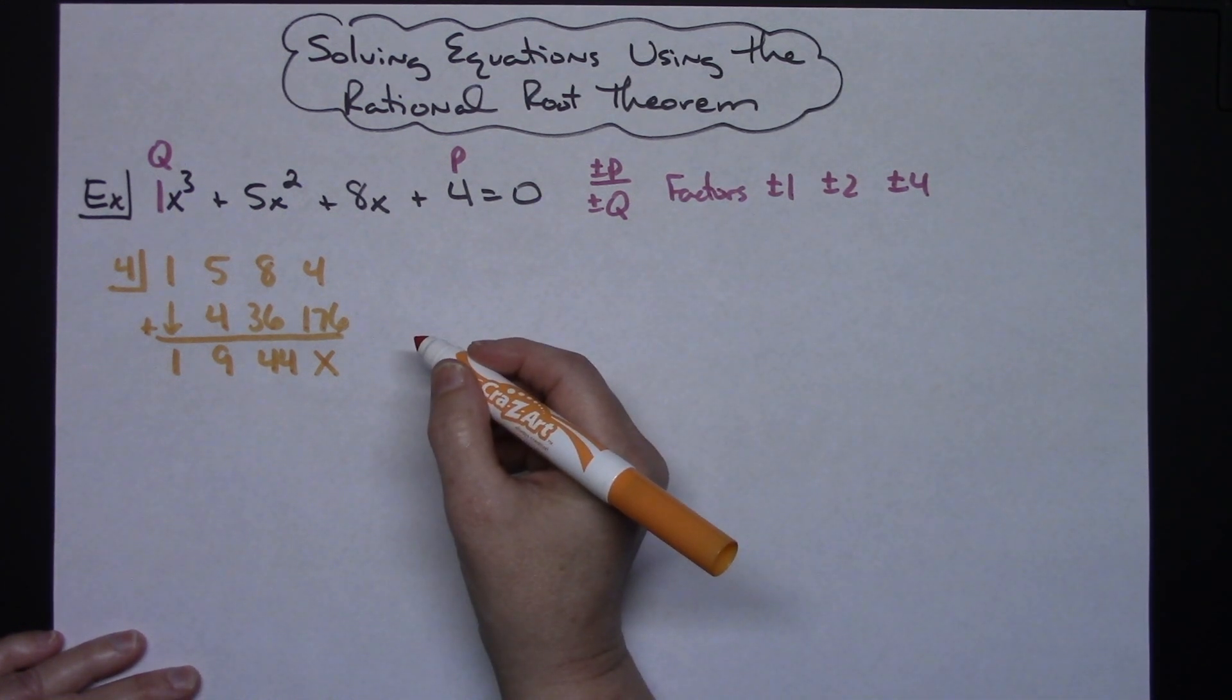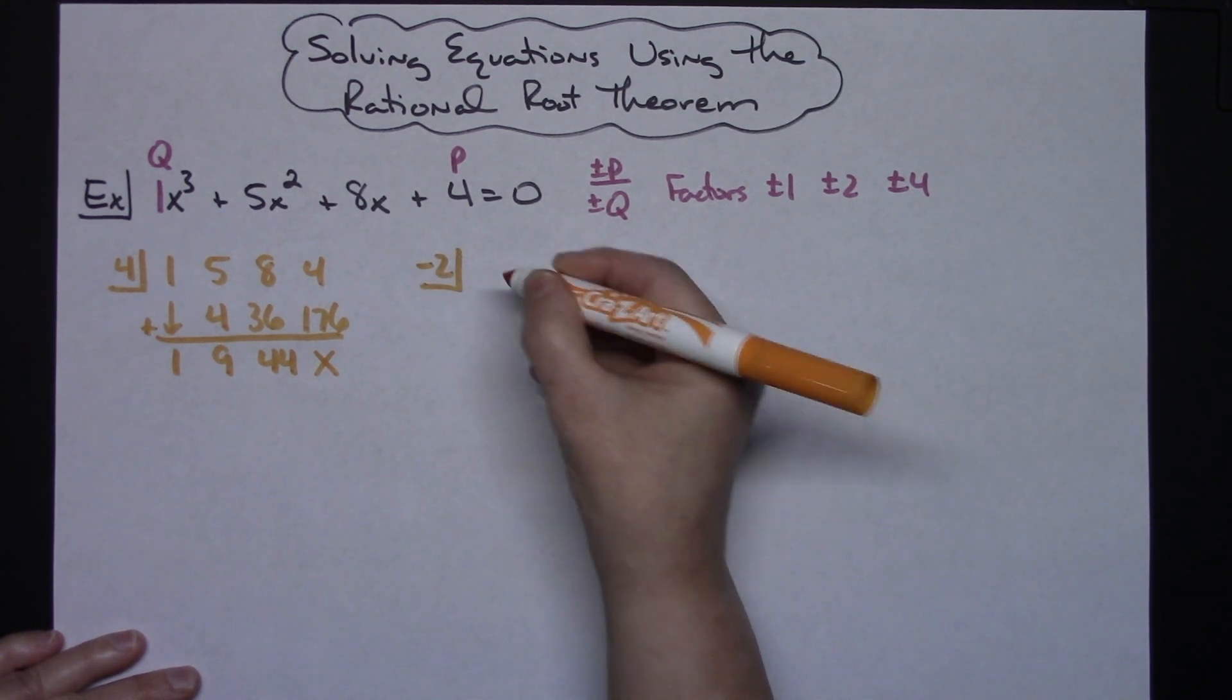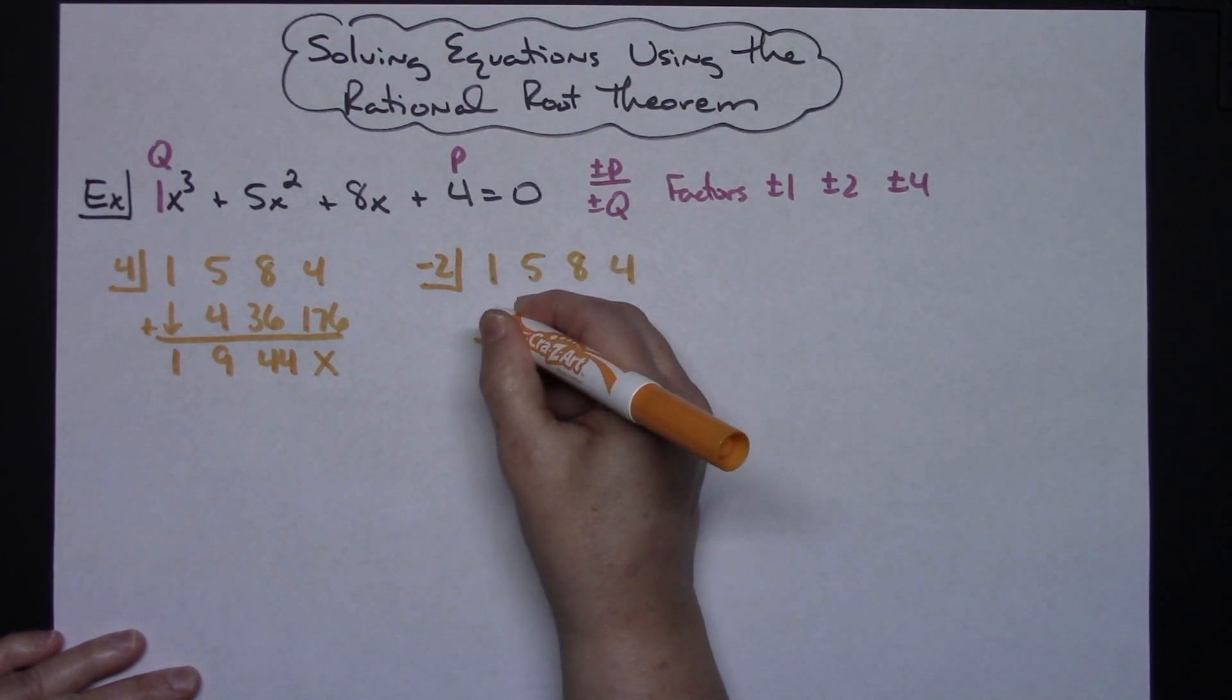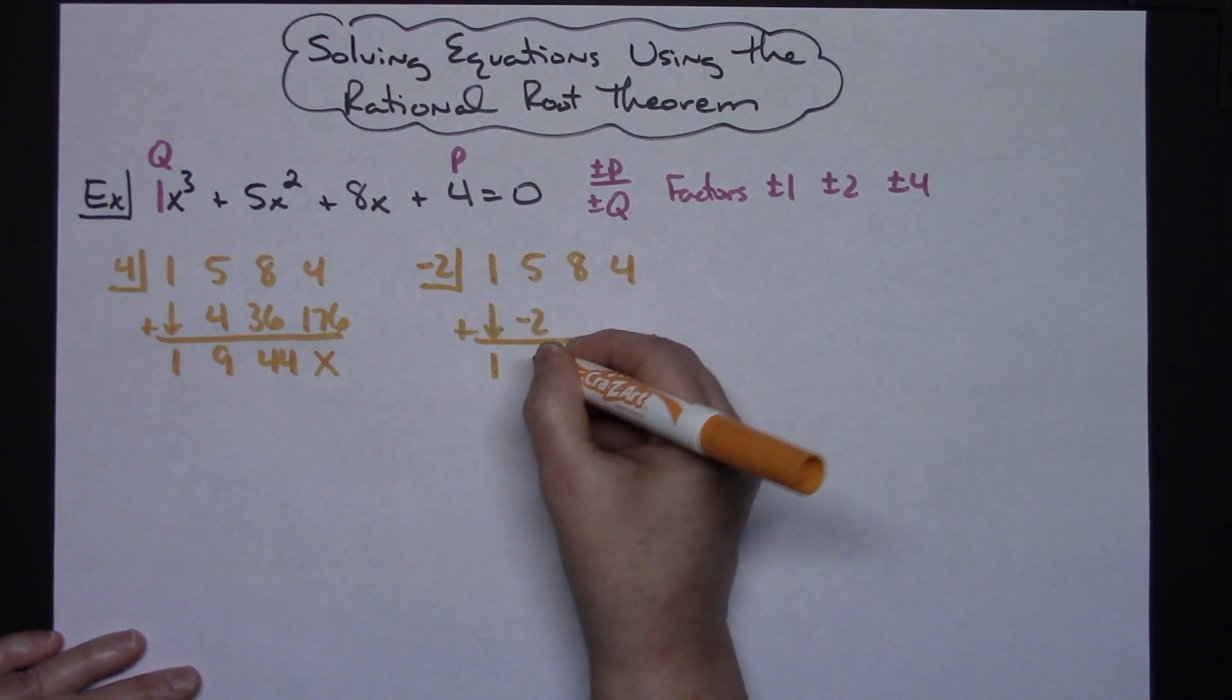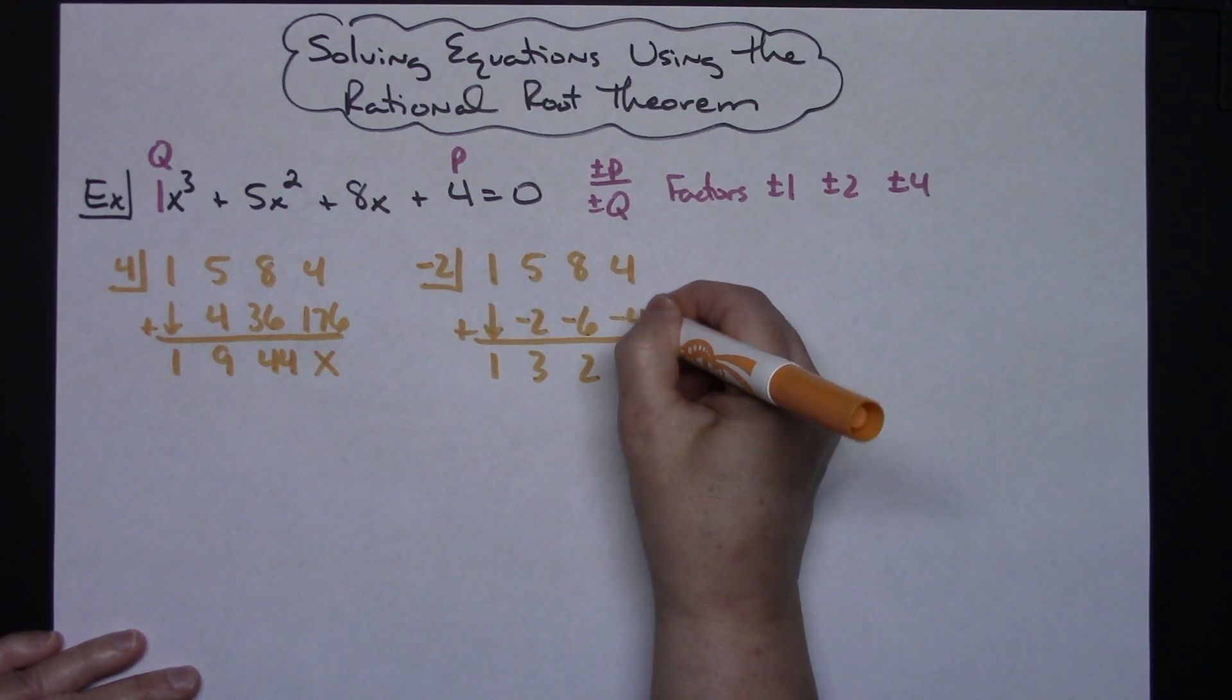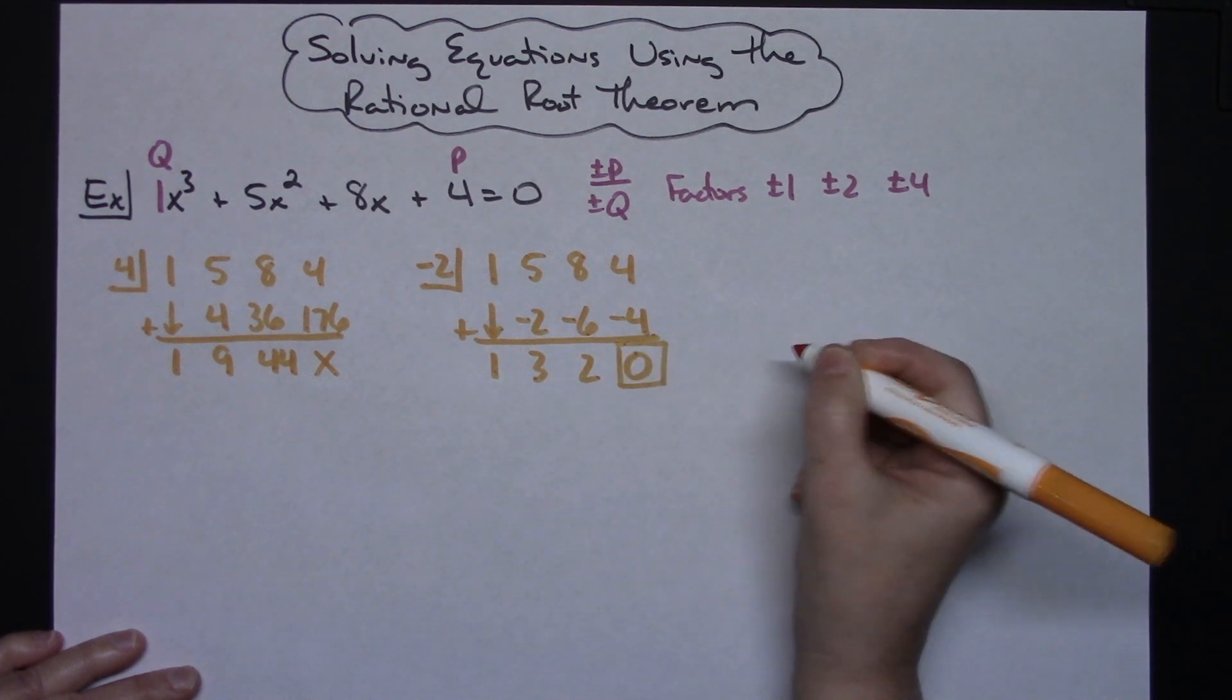Let's put a negative two in our box right there and then do our coefficients. So one, five, eight, and four, bringing down that one. One times a negative two is a negative two. Add going down I'm going to get a three. Three times negative two will give me a negative six. Add going down I get a two. Two times that negative two will give me a negative four. Four plus negative four gives me a zero and that is what I need. I need a remainder of zero.